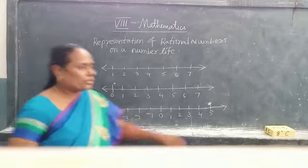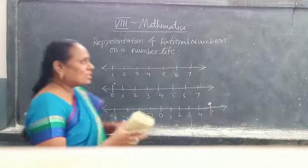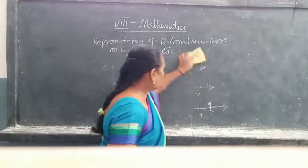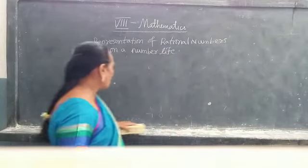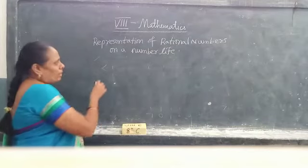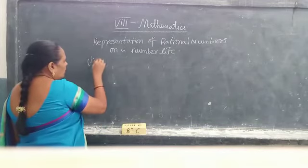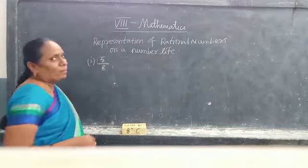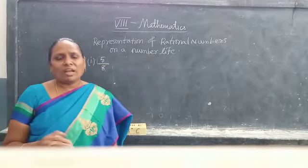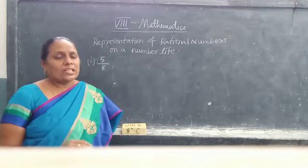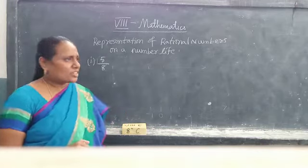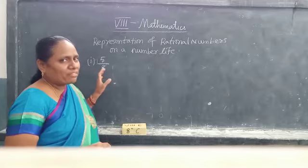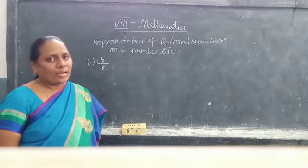Now we are going to represent rational numbers on the number line. Rational numbers are in the form of P by Q. First we represent 5 by 8 on the number line. What do you mean by 5 by 8? It is a proper fraction — the numerator is less than the denominator. That means the fraction lies between 0 and 1.